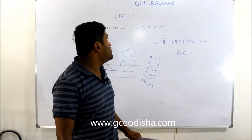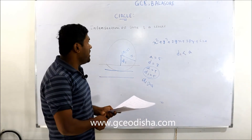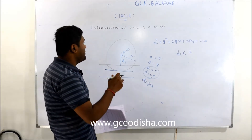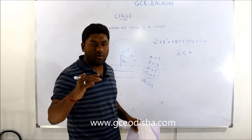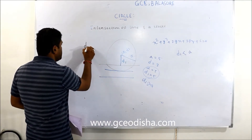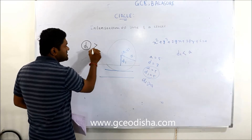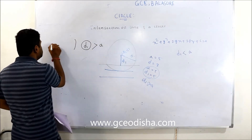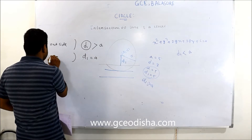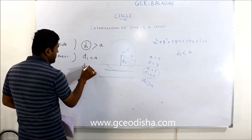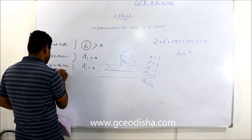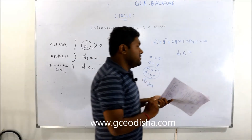Good morning everyone, welcome to Gonesh Kachim Education. In the previous class I told you about the intersection of a line and a circle — whether the line lies on the circle, inside the circle, or beyond the circle. You can find this by finding the perpendicular distance d1. If d1 is greater than the radius, the line is outside the circle; if d1 equals a, it is on the circle; if d1 is less than a, it is inside the circle.